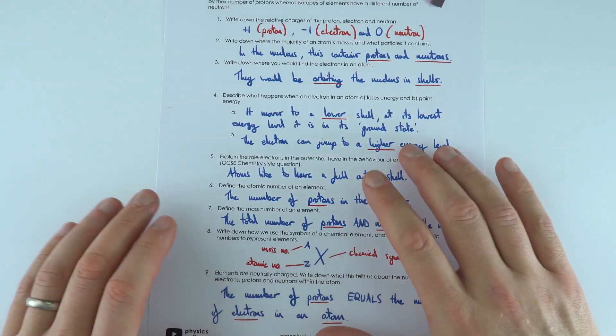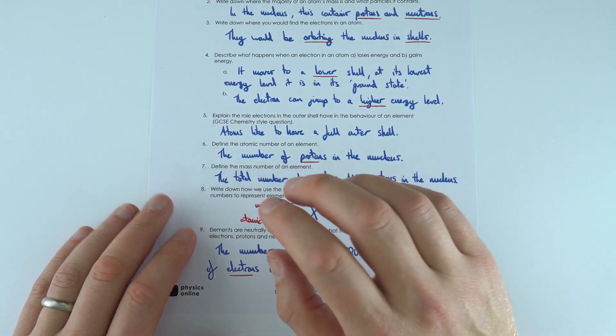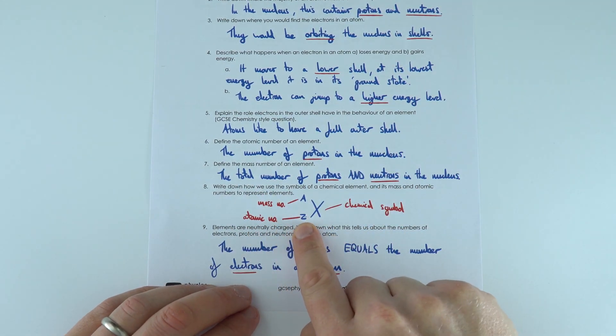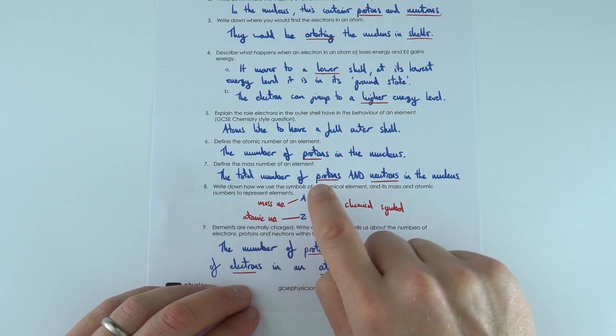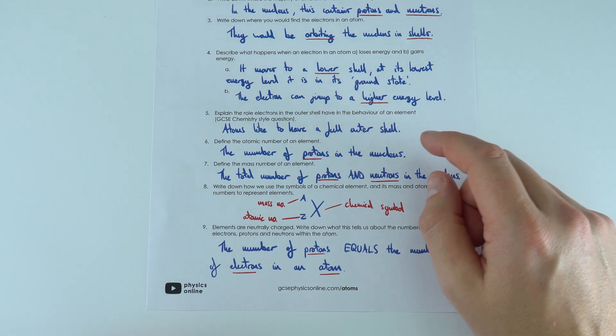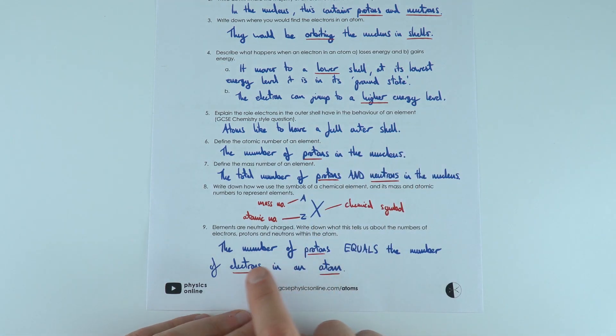What we're interested in really is what's going on in the very middle when it comes to physics. We've got the atomic number which is the letter Z, and that's the number of protons. The mass number is the number of protons and neutrons inside the nucleus of that atom. If it's neutrally charged then the amount of positive protons equals the number of negative electrons inside an atom.